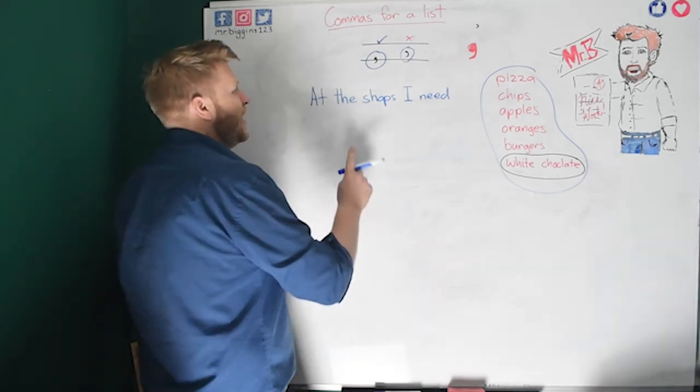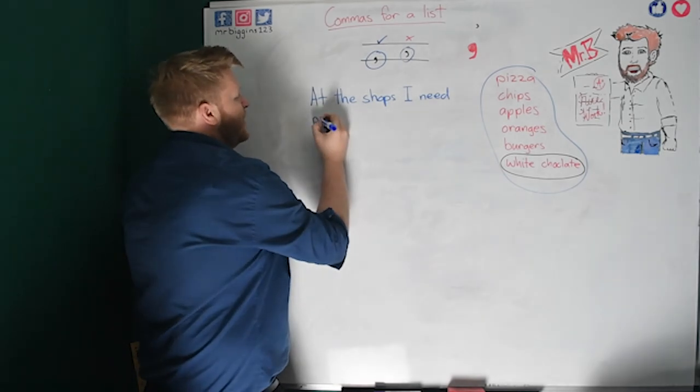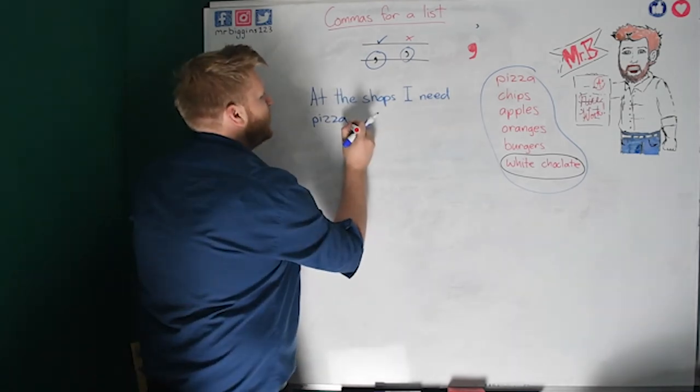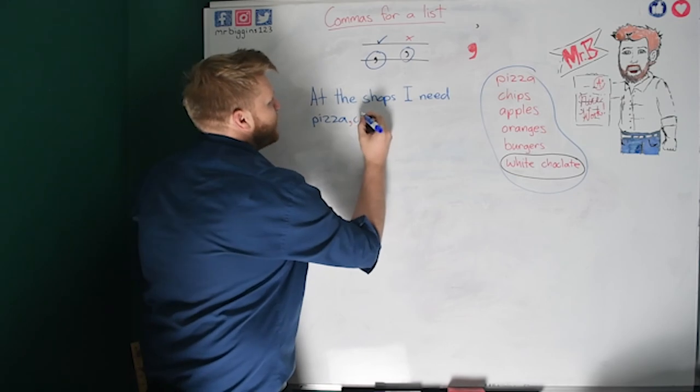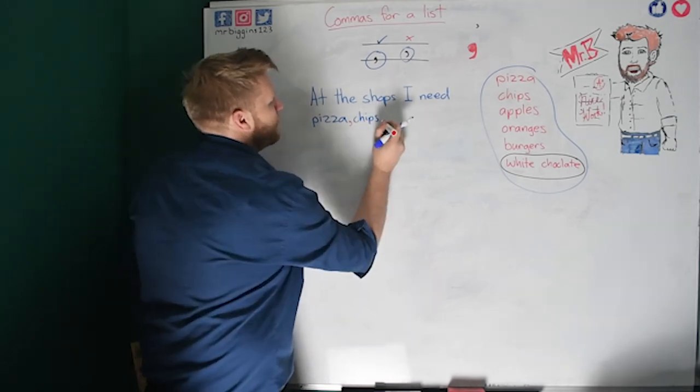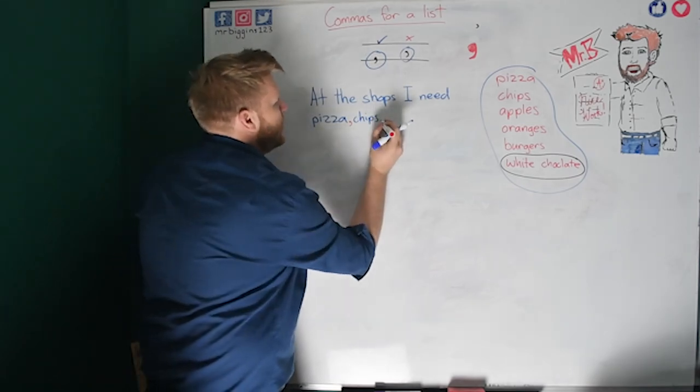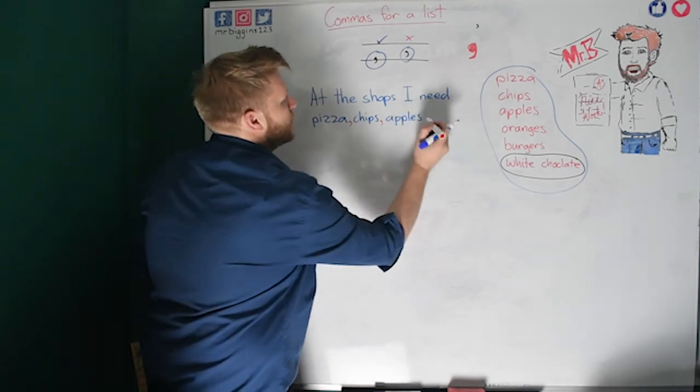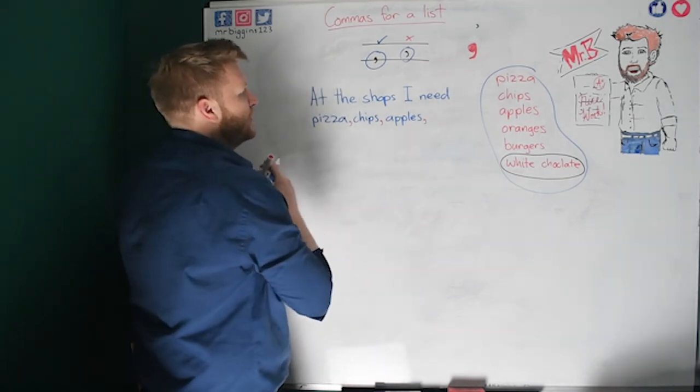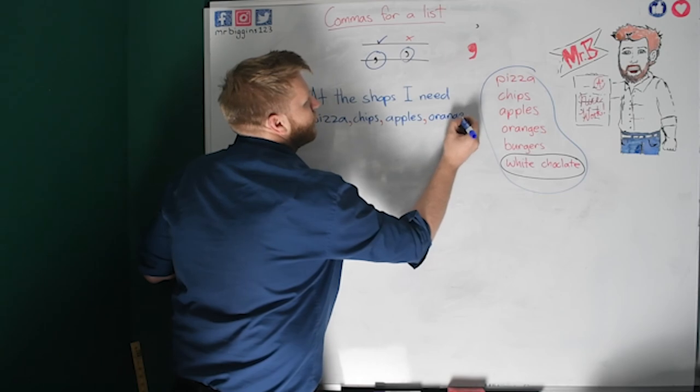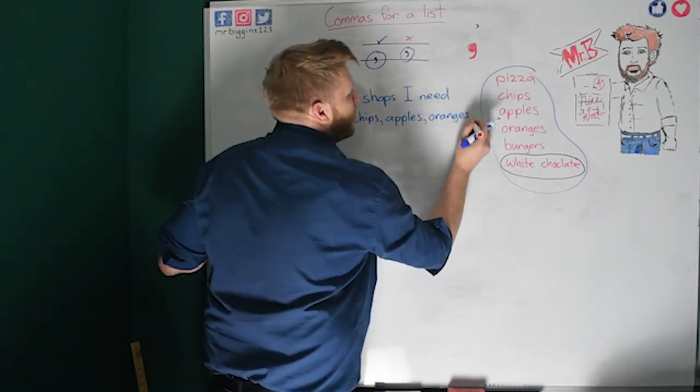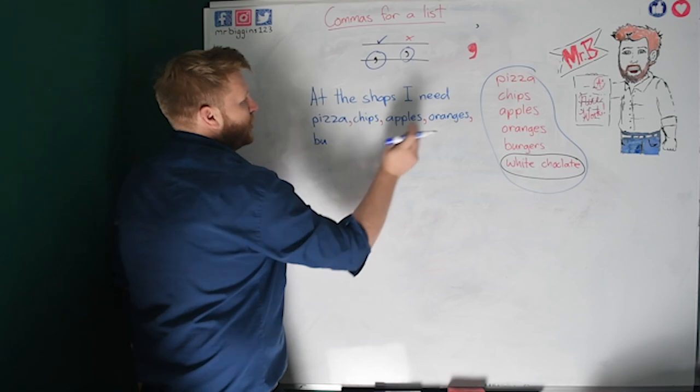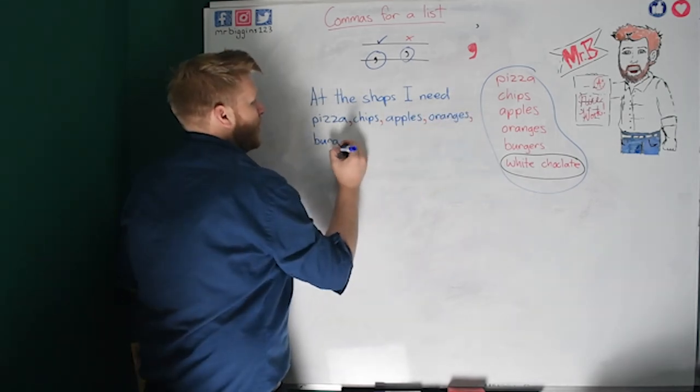Welcome back if you did pause. So now, at the shops I need, I'm going to work my way down. Pizza. I don't need a comma between need and pizza, because need isn't an item on my list. But now, I need my comma. I'm only doing them different colours to make it easy to see. Chips. We have a comma. Make it a little bit bigger. Apples. Some healthy items. Another comma, because we've got another one on the list. Oranges. The comma, and here's a good one. If you're going down onto another line, your comma goes after the last word. Okay, so I don't put my comma there. I put it after the word rather than before.